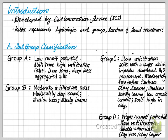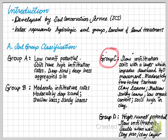Group D has high runoff potential and slow infiltration. These soils swell when wet, or have a clay pan or clay layer preventing downward flow. If you're unfamiliar with the soil type in your area, assume Group C.